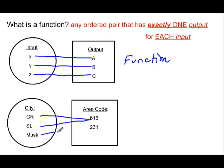But Muskegon has an area code of 231. Now I had three different inputs and only two outputs, but each input had only one output that it went to. Grand Rapids and Spring Lake had the same output, but each only had one output. This makes this a function.